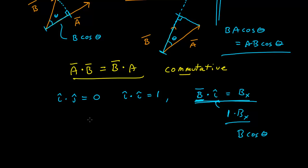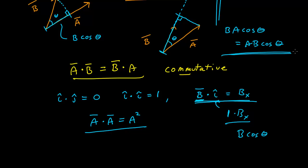Finally, any vector dotted with itself is equal to the magnitude of that vector squared — which is again easily seen from the geometric interpretation of the dot product.